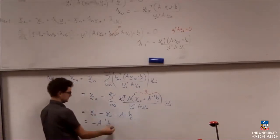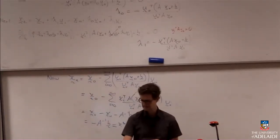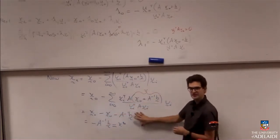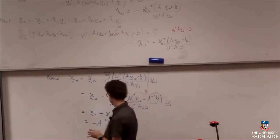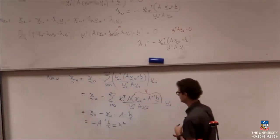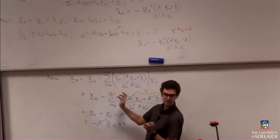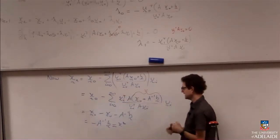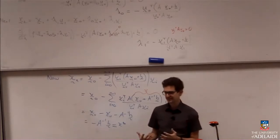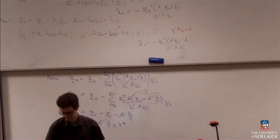And what is negative A inverse b? That is exactly my solution x star. So that's the theorem proved — after n steps, the conjugate gradient method converges exactly to the solution. Now you can see straight away that this is really powerful: if I wanted to calculate x star directly, I'd have to calculate A inverse, which takes order n cubed operations. Whereas the conjugate gradient method solves this in just n steps. So already, just in terms of linear algebra, there's a huge efficiency gain. It's a really nice, really powerful theorem, and we'll stop there.